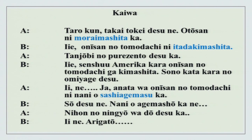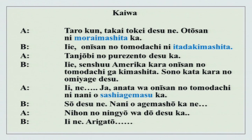I will read it out once and explain. Taro kun, takai tokei desu ne. O toosan ni moraimashita ka? Iie, o niisan no tomodachi ni itadakimashita. Tanjoubi no prezento desu ka? Iie, senshuu Amerika kara o niisan no tomodachi ga kimashita. Sono kata kara no o miyage desu. Ja, anata wa o niisan no tomodachi ni nani wo sashiagemasu ka? Nani wo agemashou ka, ne. Nihon no ningyo wa dou desu ka? Iie, ne. Arigatou. There are two new words here: itadakimashita, sashiagemasu, and another new word which is kata.